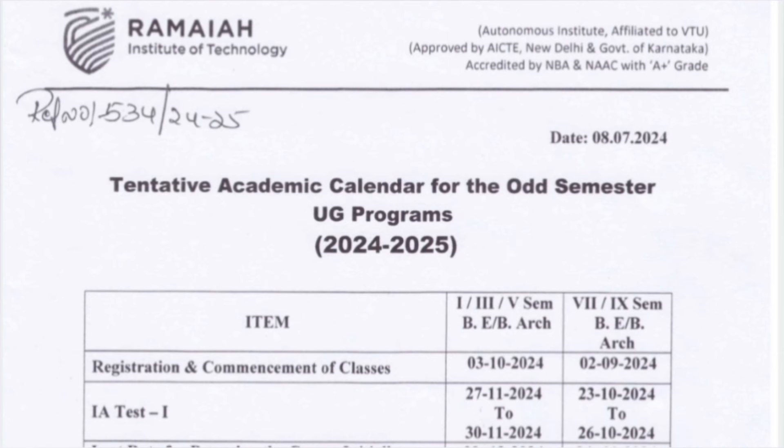The first internal assessment (IA), which is basically one of the exams in the first semester, is between 27th November to 30th November. Within these four days your test will be conducted, and these marks will be added to your first semester overall marks.